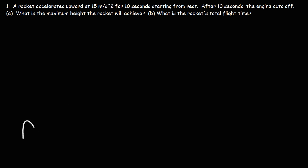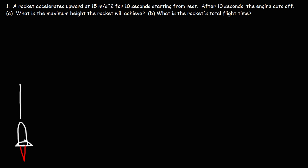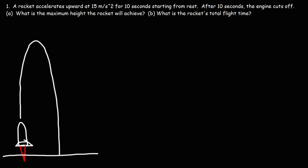Let's draw a picture of the rocket going up, and then once the engine cuts off, it will still go up, and then eventually it's going to fall back down to the ground. We'll label key points in the rocket's trajectory: point A is where it begins to take off from rest, point B is when the engines cut off, point C is where it reaches its maximum height, and point D is when it returns to the ground.